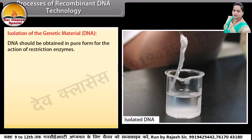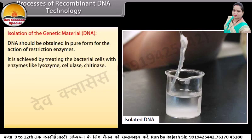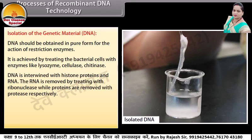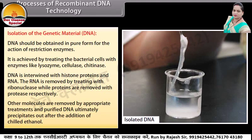Isolation of the genetic material, DNA: DNA should be obtained in pure form for the action of restriction enzymes. It is achieved by treating the bacterial cells with enzymes like lysozyme, cellulase, and chitinase. DNA is intertwined with histone proteins and RNA. The RNA is removed by treating with ribonuclease, while proteins are removed with protease. Other molecules are removed by appropriate treatments, and the purified DNA ultimately precipitates out after the addition of chilled ethanol.